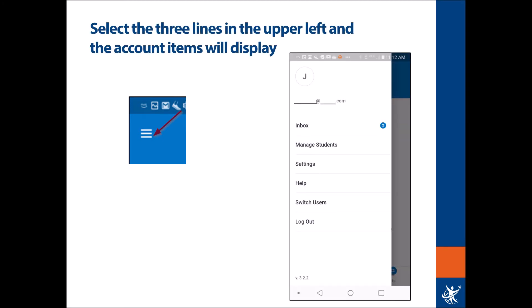When you select the three lines and the menu pops up, you will see your name and the email associated with your parent account through the student information system. If that is not an accurate email, please contact your school and update your records there. There will also be an online method through our Home Access Center where you can update your email, or you can use the update form that comes out annually to make sure your information is accurate.